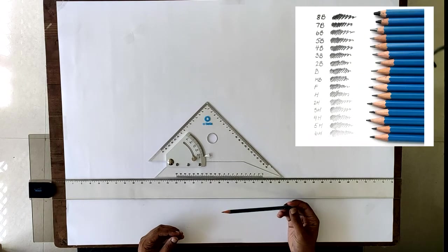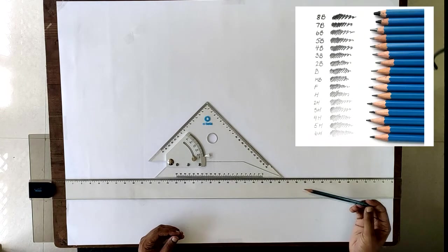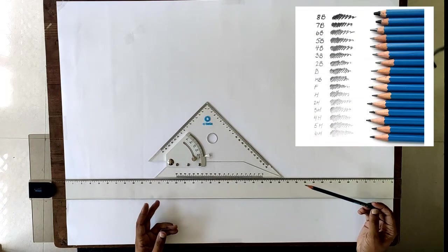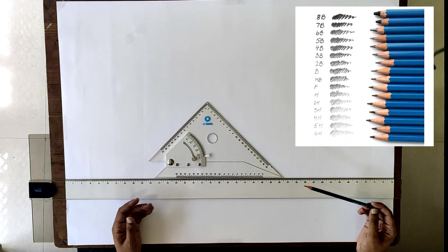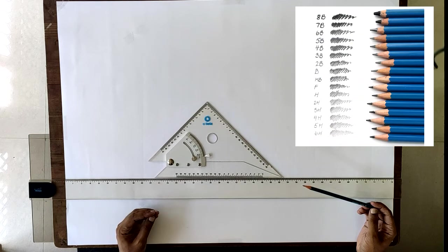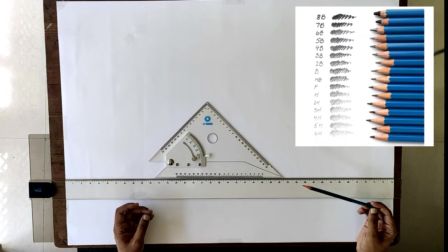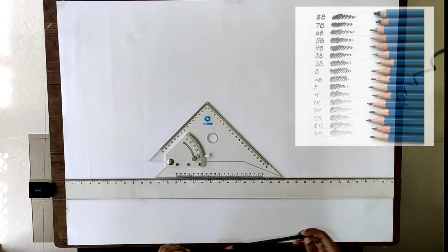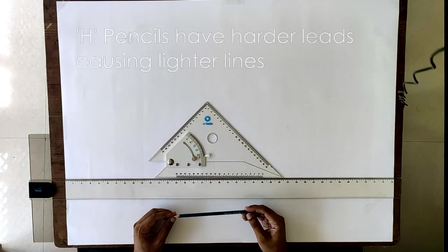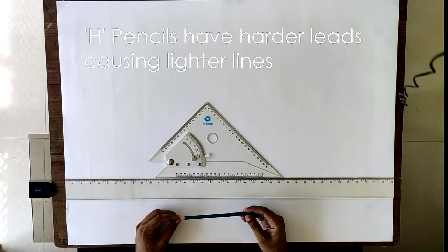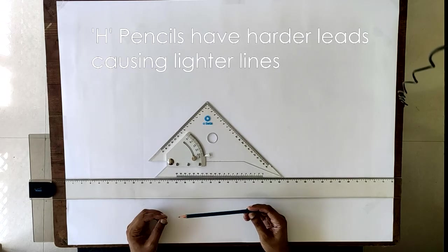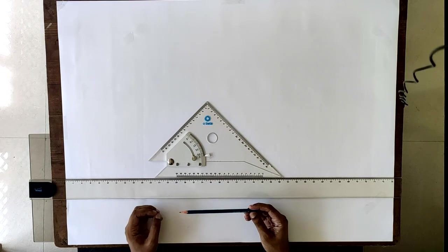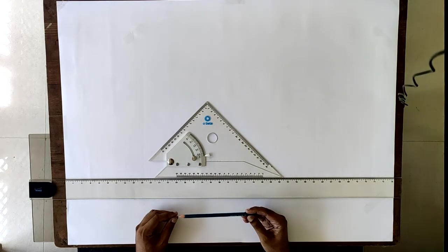Then comes 8H, 7H, 6H, 5H, 4H, 3H, 2H, H, and then HB. After that starts the black pencils, that is the soft pencils: B, 2B, 3B, 4B, 5B, 6B, 7B, 8B, and up to 9B. The H pencils are hard and the lines that they make are very light. As the H value increases, the lines drawn by the pencil will become lighter because the graphite used in the pencil will be harder.